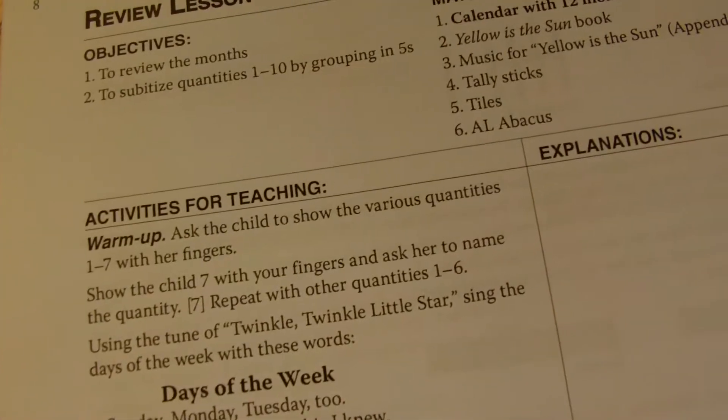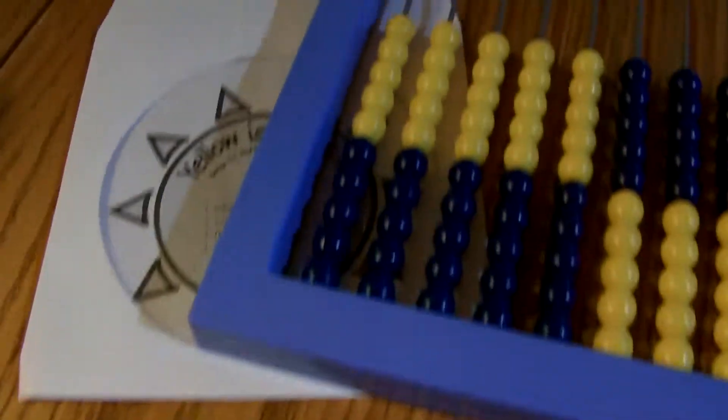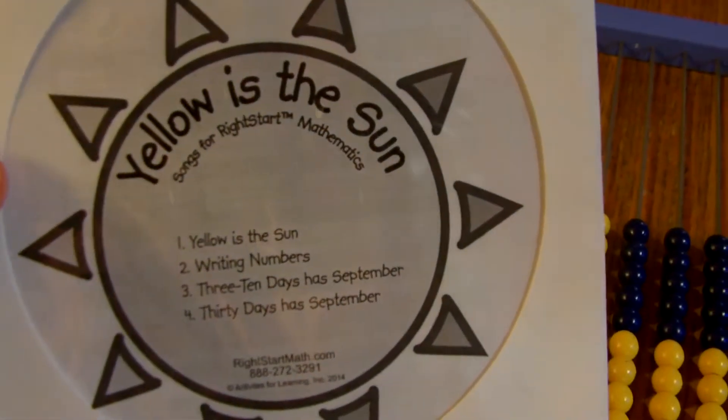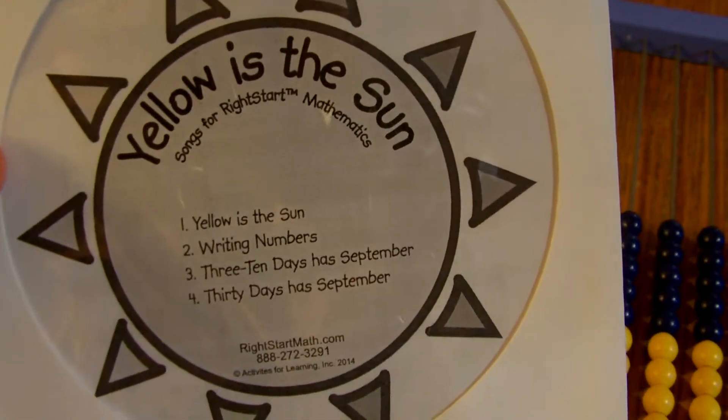Three ten days, half September, April, June, and November. All the rest have three ten, one to carry, but only two ten, eight in February.